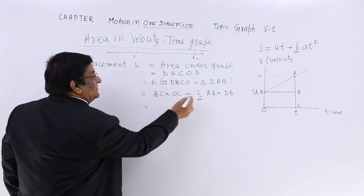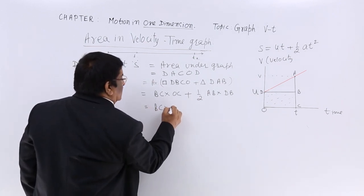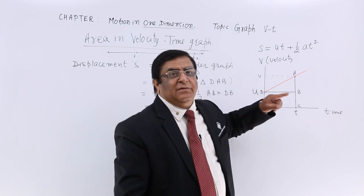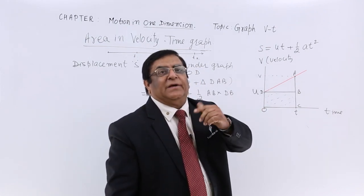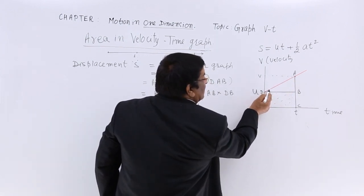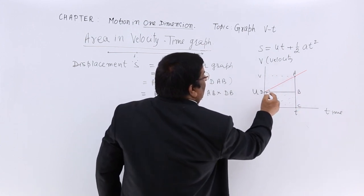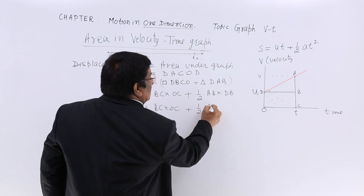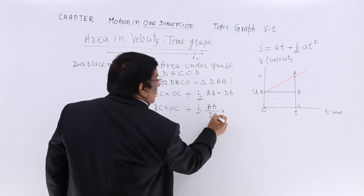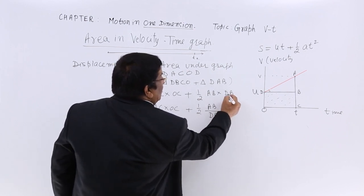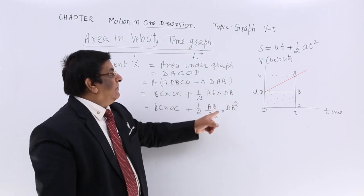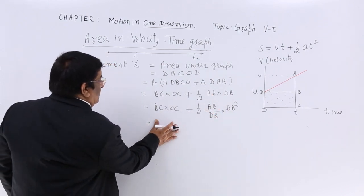Now I do some jugglery here, mathematical. This remain like this, this half. I want slope of this line because slope can be converted as acceleration. What is the slope given by? Slope of this line is given by tangent theta and tangent theta is AB upon DB. Here is AB. So I make it AB upon DB. This DB I bring from myself. So I put another compensation DB here and one DB is this. So I write it this way. You can see, it will come the same. Now, putting values.